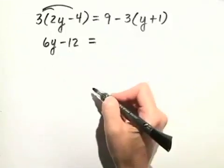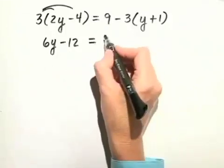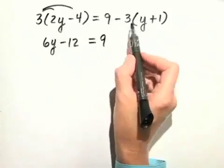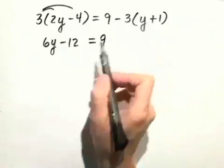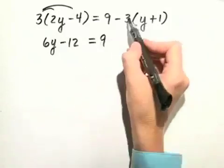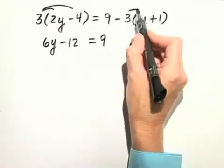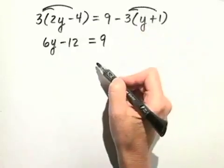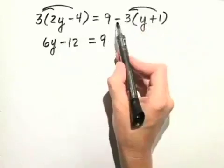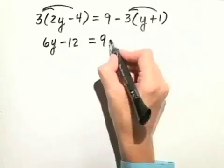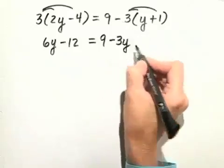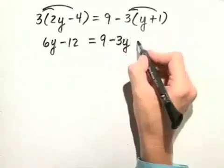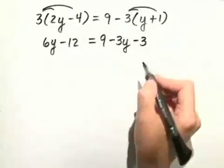Equals, on the right-hand side, let's just rewrite the 9. Don't do 9 minus 3, because that's subtraction. First, we have to multiply by distributing the 3 through. Now remember, the 3 has a negative sign in front of it, so we're actually going to distribute negative 3 through. So we have 9, then we have minus 3 times y, which is minus 3y, and then we have minus or negative 3 times 1, which is negative 3.